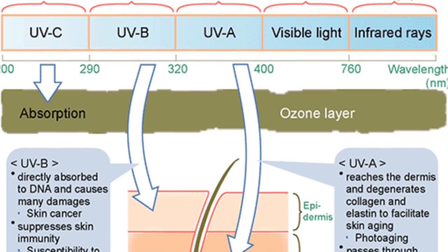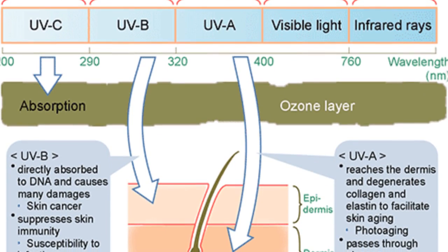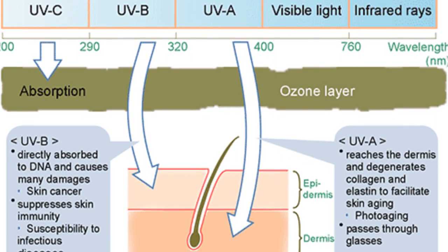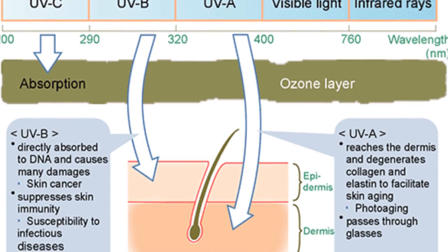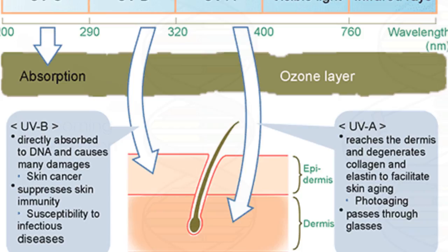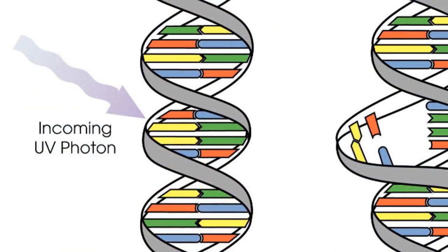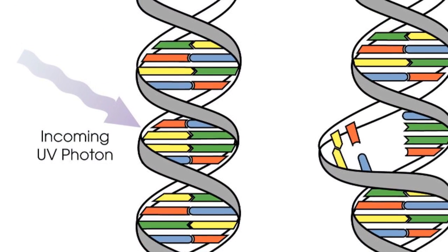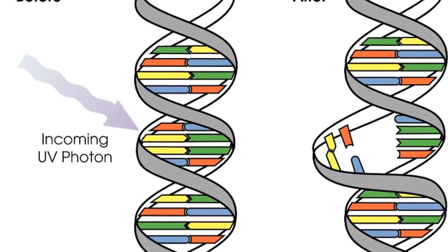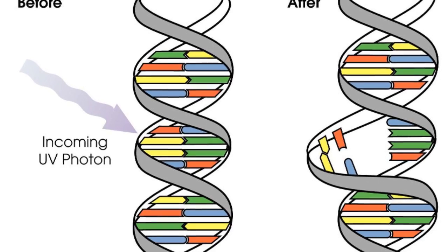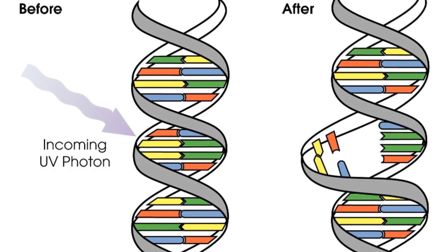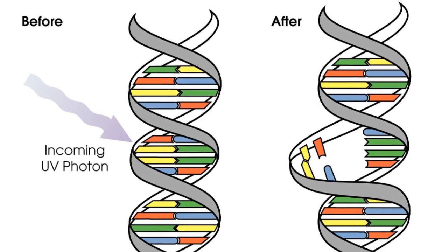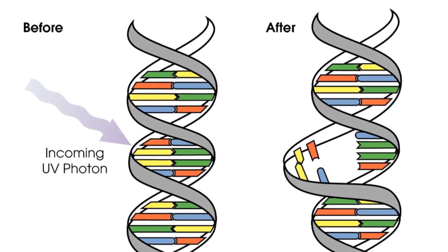Such deterioration allows large amounts of ultraviolet B-rays to reach Earth, which can cause skin cancer and cataracts in humans and large animals as well. Researchers have also documented changes in the reproductive rates of young fish, shrimps, crabs, frogs, and salamanders exposed to the excess ultraviolet.